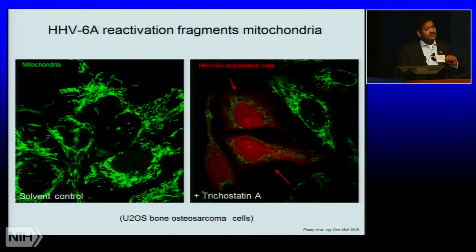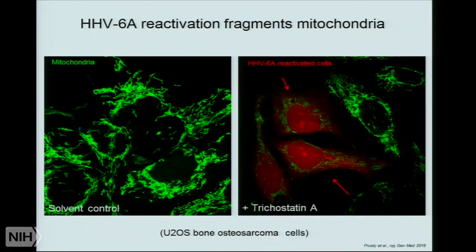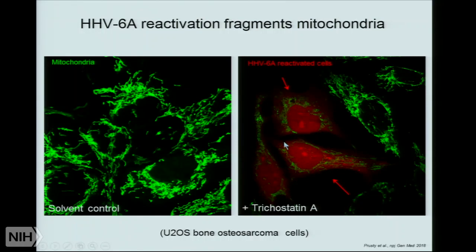A couple of years back, we developed the first-ever latent HHV6A model. We took HHV6, put a fluorescent molecule into the HHV6 genome, and then targeted it into the cell. As you know, HHV6 goes and integrates into the chromosome in the subtelomeric region. When the virus is integrated, no fluorescent molecule is produced. The moment you reactivate the virus, the cell produces these fluorescent molecules, and then you can know where the virus is reactivating. If you look into these cells — this is the solvent control, and here are the trichostatin A-treated cells — you can clearly see that cells which are reactivating the virus have a completely different mitochondrial morphology. This is a very strong phenotypic effect.